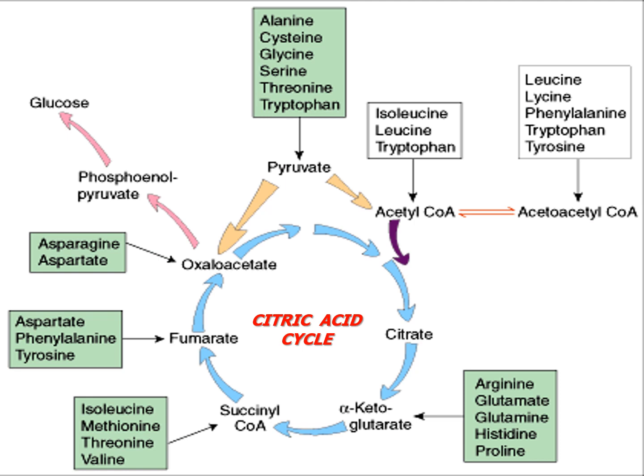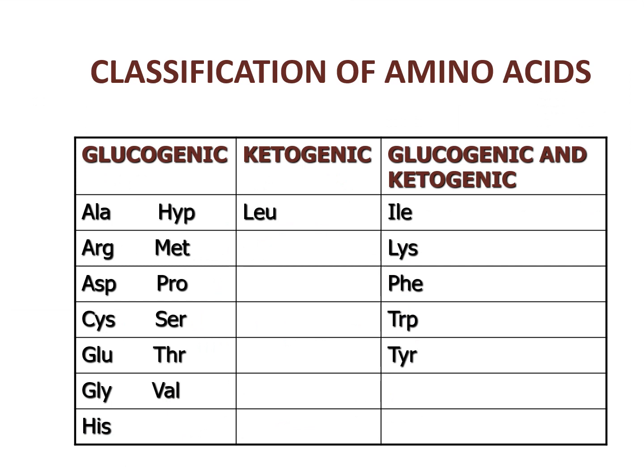These pathways connect to your citric acid cycle and gluconeogenesis cycle. Amino acids can be glucogenic, ketogenic, or both glucogenic and ketogenic. The only purely ketogenic amino acid is leucine.